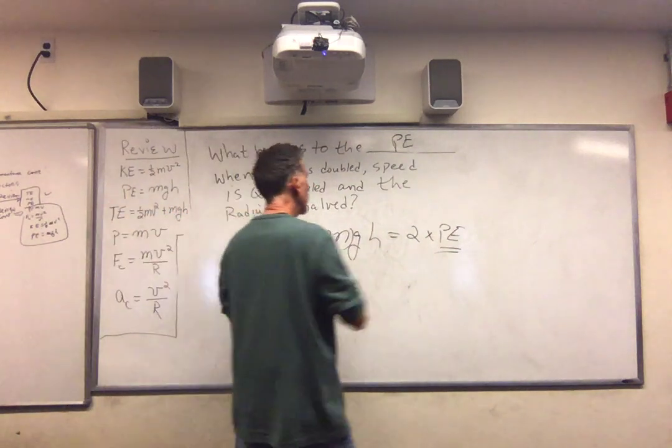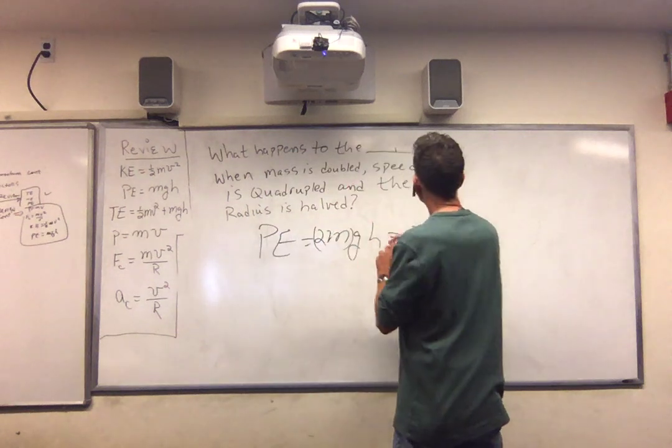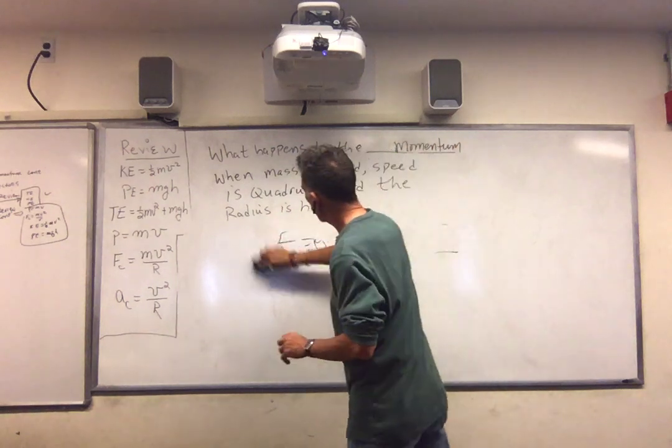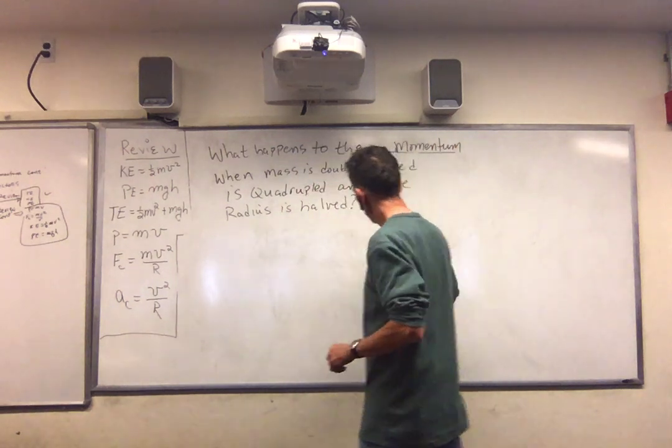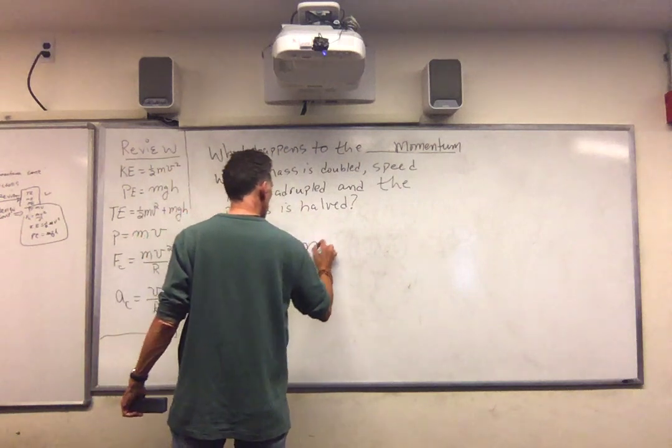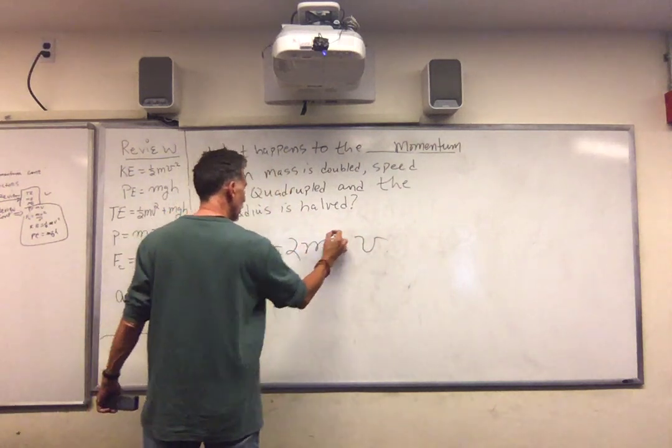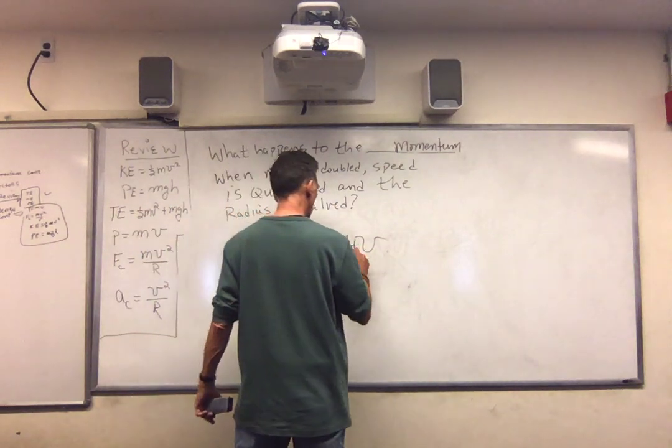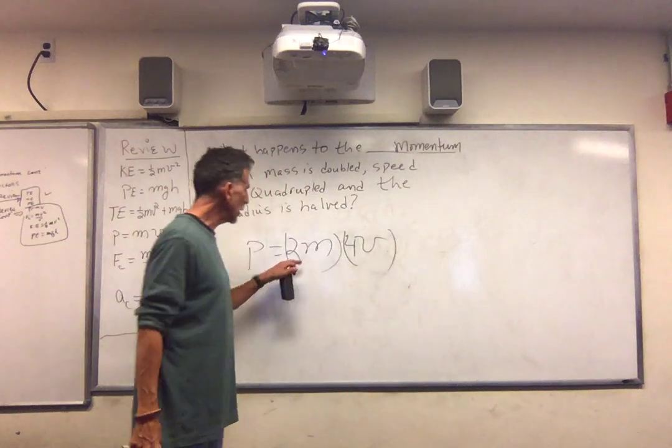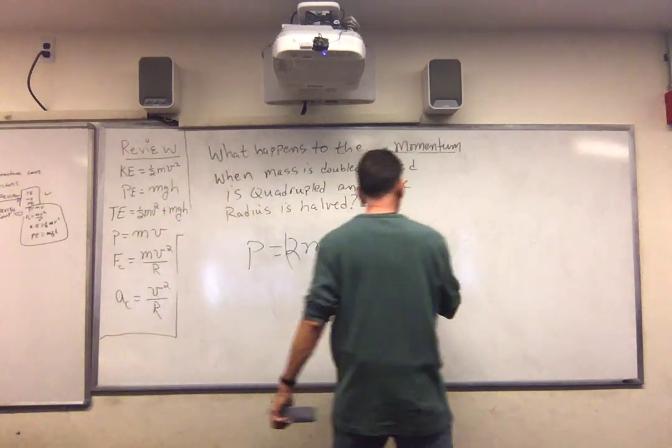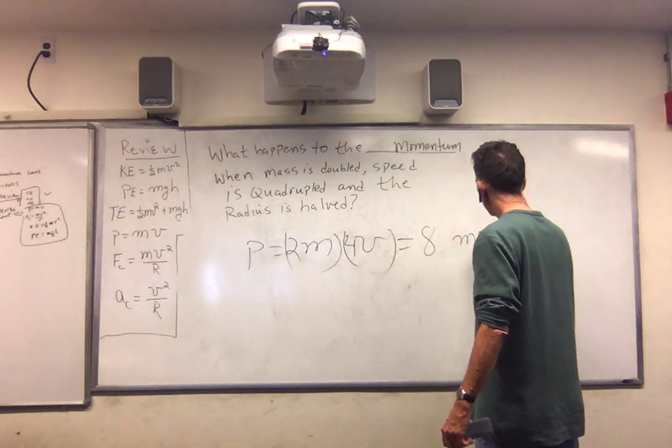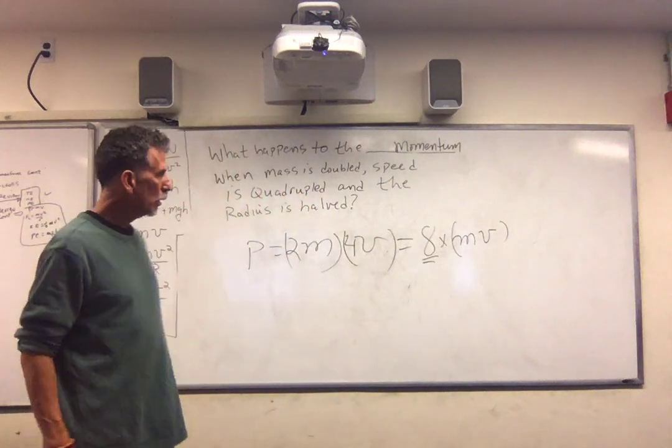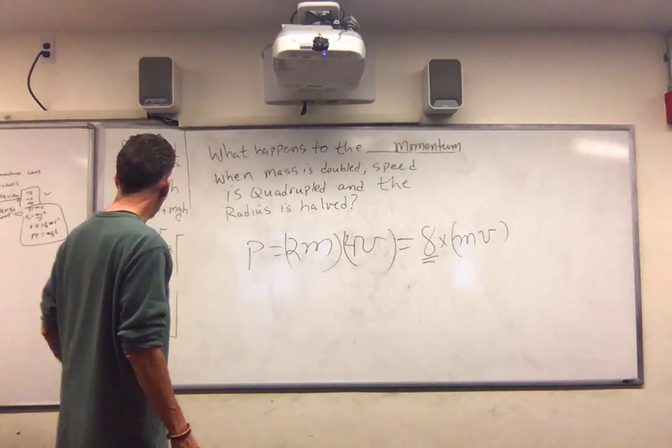Next, let's look at momentum. We have momentum is mv. Mass doubled. V is what? What am I doing to the speed? It's quadrupling. Four. So you just simply get 2 times 4 is 8 times mv. So the momentum is increased 8-fold or by 8 times. Momentum is increased 8 times.